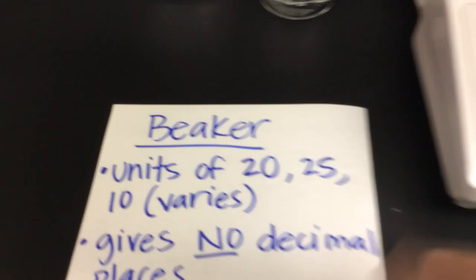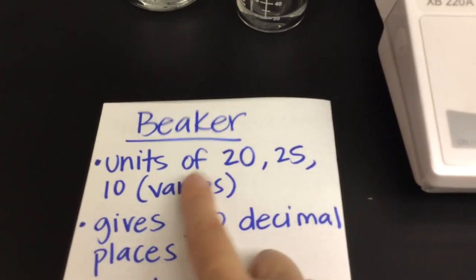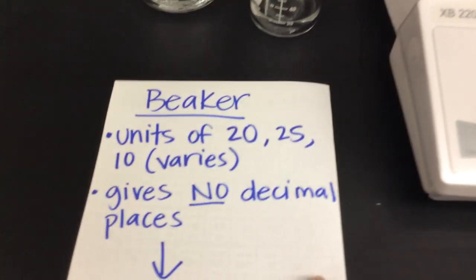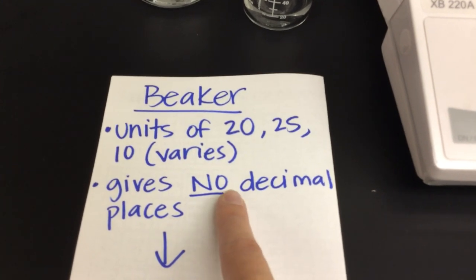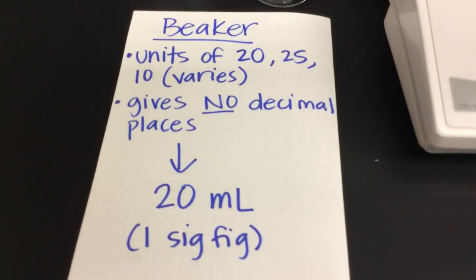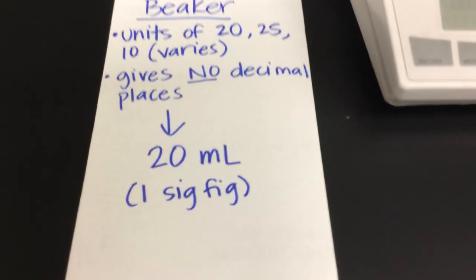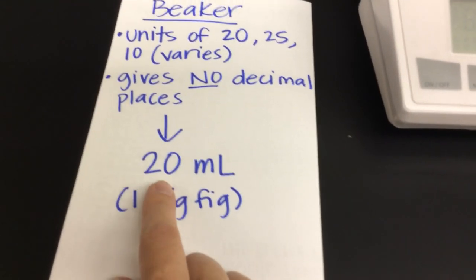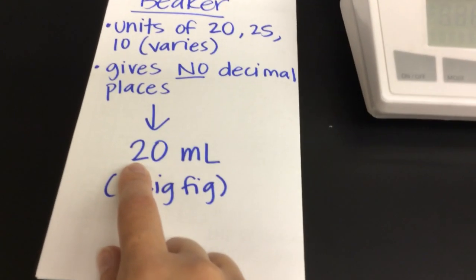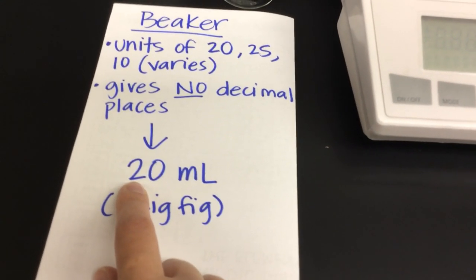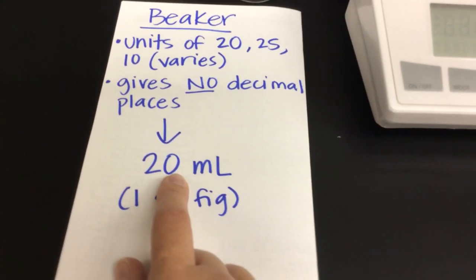So if you're using a beaker, the units vary, 10's, 20's, 25's. You get zero decimal places with a beaker. So I never ever want to see a volume from a beaker that's got a decimal place. Because you're not going to be able to get it. What are you confident of? Well, I know it's at least the first digit's a 2.